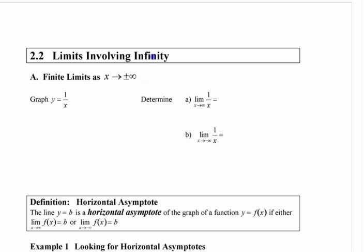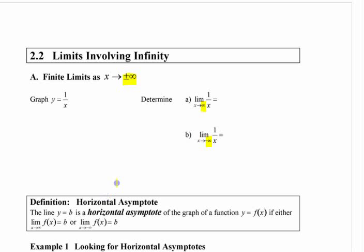There are two different things we're going to look at. I just called this 'limits involving infinity' because there are two different things. One is if you have a finite limit as x approaches infinity — that's where the infinity is, in other words, the infinity is what you're allowing x to approach. So that's Part A.